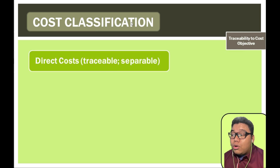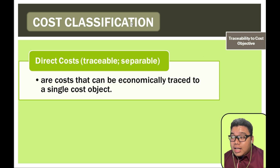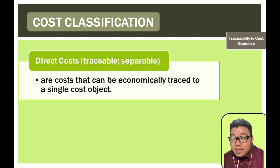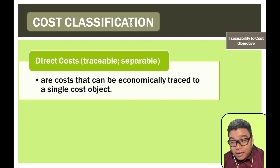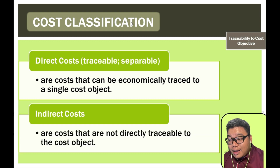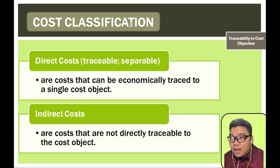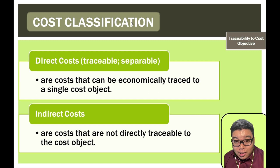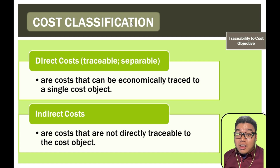Traceability to cost objective: a direct cost can be economically traced to a single cost object — examples are direct materials or direct labor for manufacturing costs. Indirect costs are not directly traceable to the cost object because they cannot be specifically attributed to it — an example would be manufacturing overhead.